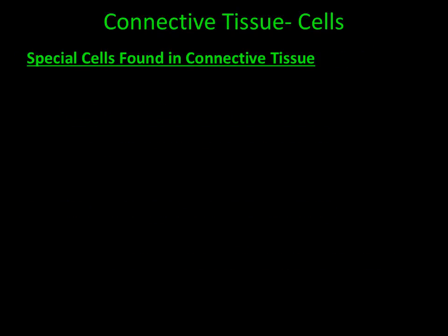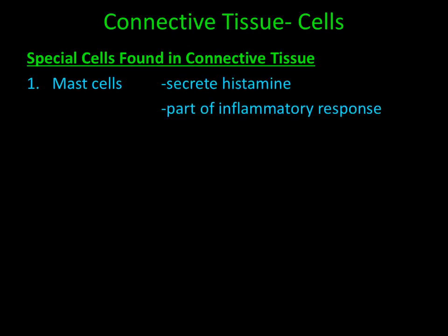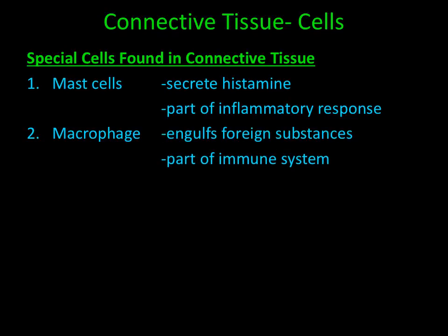There are other types of cells found in connective tissue that have special functions, two of which we'll discuss in this lecture. The first cell is called a mast cell. A mast cell plays a role in the inflammatory response by secreting a substance called histamine, which acts as a vasodilator. The second special cell is called a macrophage. A macrophage is a white blood cell or leukocyte, produced by the cardiovascular system but part of the immune system because it engulfs foreign substances — think of it as a little pac-man going around looking for things to eat.